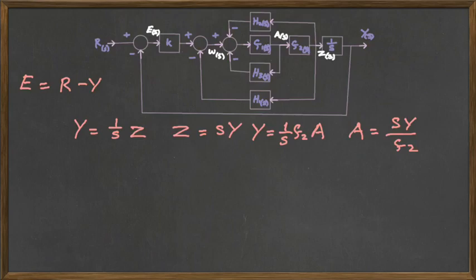So those circles are actually summing blocks that sum signals together, not decision blocks, summing blocks. The E signal there going into the K is just R minus Y. And likewise, if we look at the W, we can say that the W is K times the E signal minus Z times the H1 signal. So H1 is a function, Z is a variable, E is a variable, and K is a function.